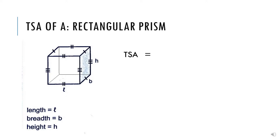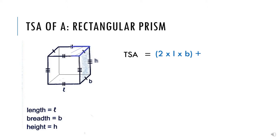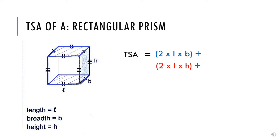When I calculate the total surface area of this rectangular prism, I will start by multiplying 2 with the length and the breadth — so 2 times length times breadth. Why am I multiplying by 2? Because length times breadth is the formula for the area of a rectangle or square. However, we multiply by 2 because this area is on either side of this prism. Then we add 2 times length times height, which refers to those two sides, because there are two sides on either side of this prism.